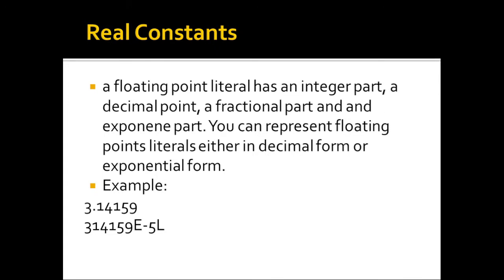A floating-point literal has an integer part, a decimal point, a fractional part, and optionally an exponent part. You can represent floating-point literals in decimal form or exponential form. For example, 3.14159 is in decimal form. The value 3.14159e-5L means 3.14159 times 10 raised to negative 5, stored as long — this is what we call scientific notation.